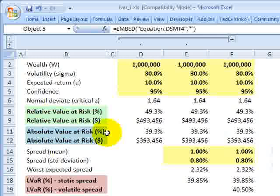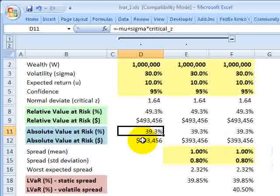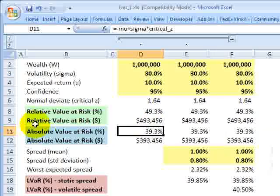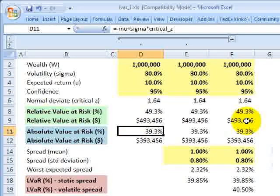Now, the absolute VAR builds on that by including the expected return, because so far, we haven't included the expected return, and that's because this relative VAR here, we typically use for short periods, like daily VAR, where implicitly we are assuming the expected return is zero. For longer periods, we should incorporate the expected return and use the absolute value at risk.